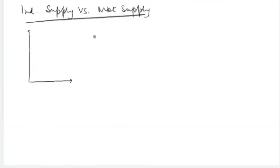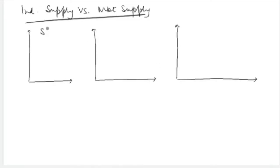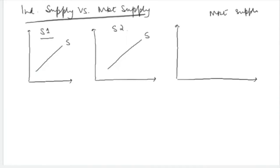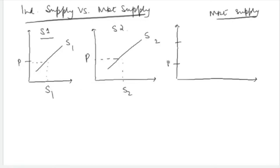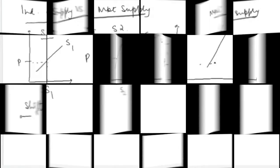You can also differentiate between the individual supply curve and the market supply curve, similar to what we discussed for demand. Suppose you have two producers — supplier one and supplier two — in the market. You can get the market supply curve by conducting a horizontal summation of these two supply curves. At a given price, figure out how much supplier one is supplying and how much supplier two is supplying, then add S1 plus S2 to get total market supply.